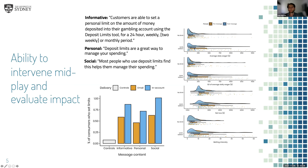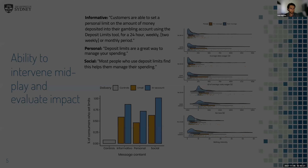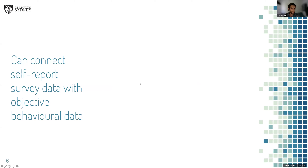Looking at the graphs comparing limit setters and non-setters, with yellow representing pre-message and blue post-message, we can see that limit setters significantly reduced the amount they were spending every day, the variation in spending — which is an indicator of problem gambling — how much they were losing, and how often they were gambling, significantly more so than people who didn't set a limit.